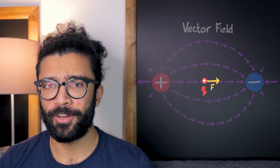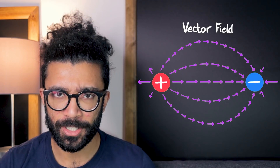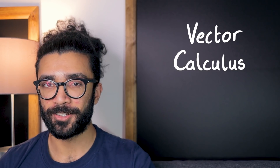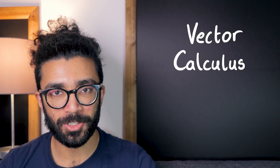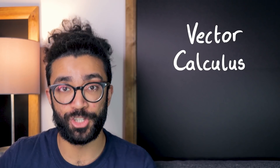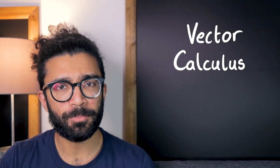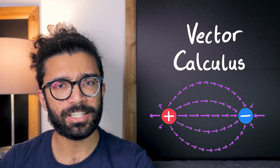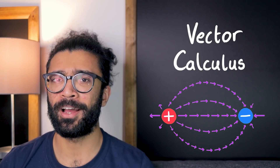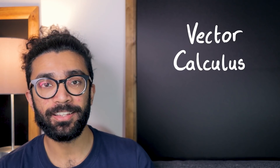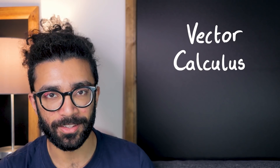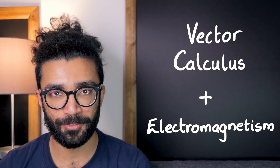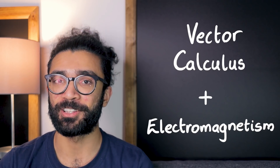Now because electric fields are vector fields, we can study them using a branch of mathematics known as vector calculus. It turns out that there are certain mathematical identities — things that are true generally in mathematics — that apply to lots of different kinds of vectors, including our vector field, that we can essentially steal from mathematics and apply to our electric fields. And we can take these mathematical tools and combine them with the study of electromagnetism, the study of electric and magnetic fields, and when we do so, we get some rather interesting results.